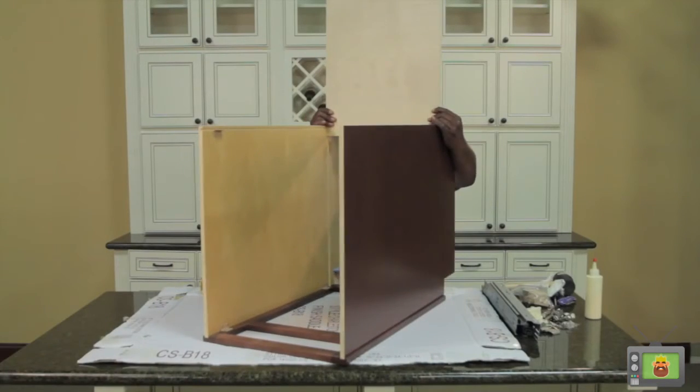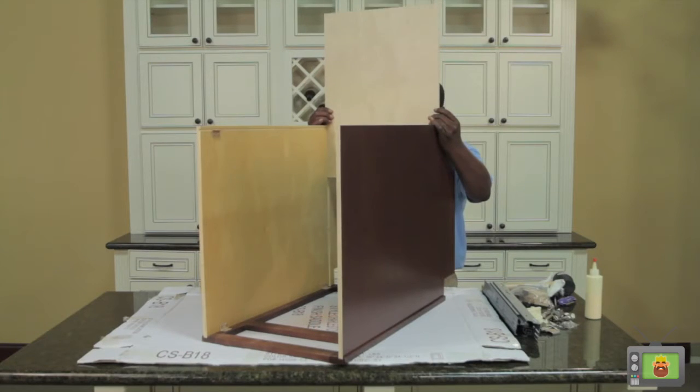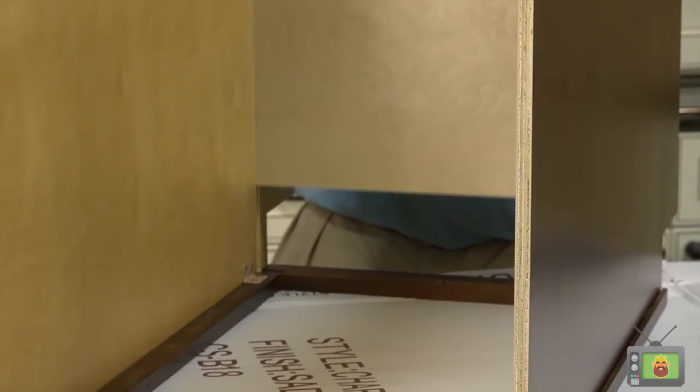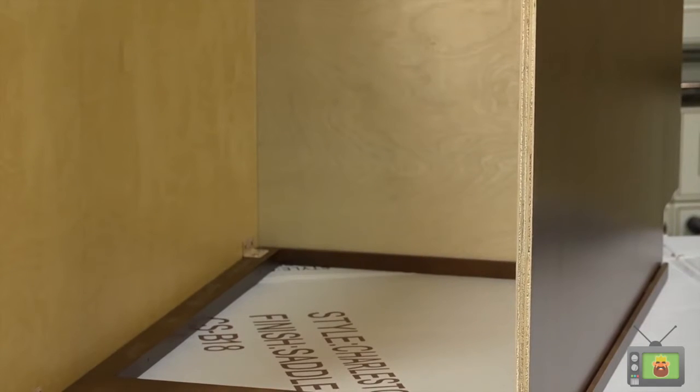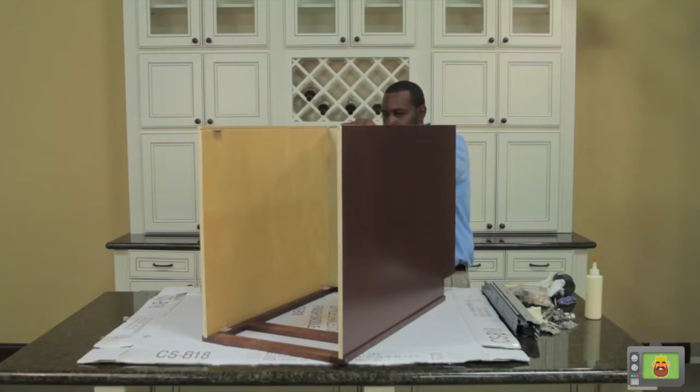After the two sides are constructed, place the bottom panel in the dado between the two sides. Ensure the panel is seated into the face frame and side panel dados. Do not fasten these panels together until the back panel is in place.